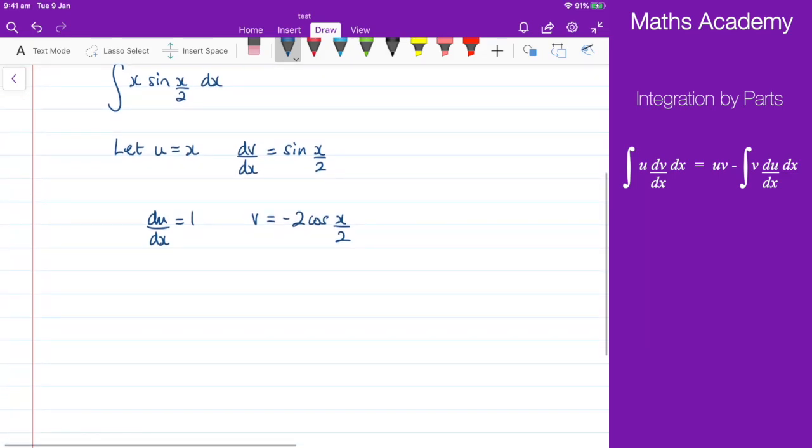Now plugging all this into the integration by parts formula, we have that the integral of x sine x over 2 with respect to x is equal to u multiplied by v, so that's negative 2x cosine of x over 2,